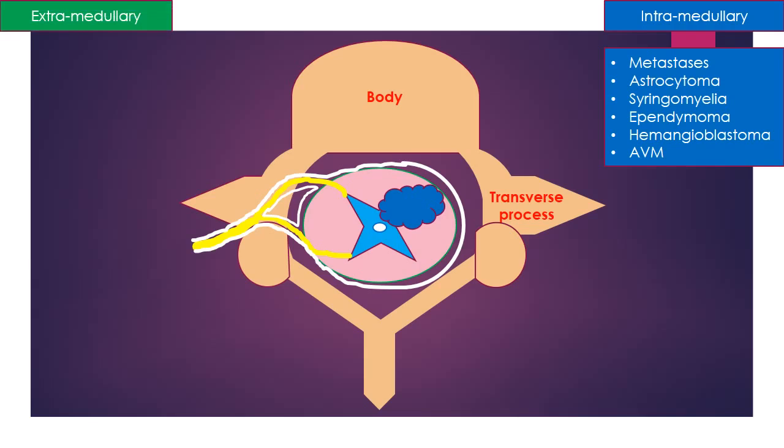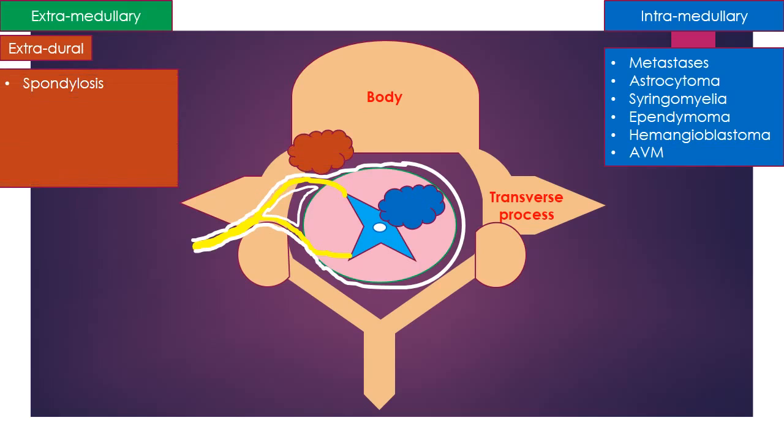The second type, extramedullary lesions, arise outside the substance of spinal cord and are further divided into extradural, arising outside the dura mater from vertebral bone and epidural tissues. For example, spondylosis, metastasis, vertebral lesions like osteomyelitis, epidural lesions like abscess or hematoma, and extramedullary hematopoiesis.